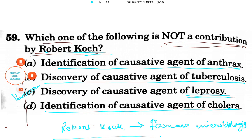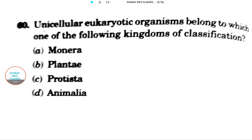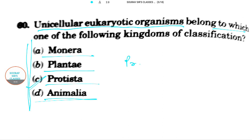In the next question, we're asked about unicellular eukaryotic organisms that belong to one of the following kingdoms of classification. The options are Monera, Plantae, Protista, and Animalia. I think option C is the correct answer: Protista. What are protists?